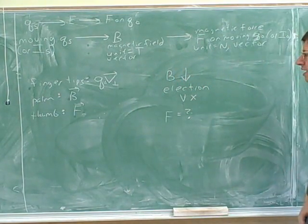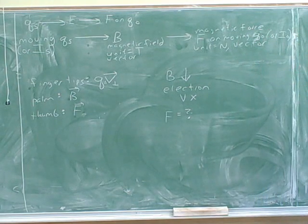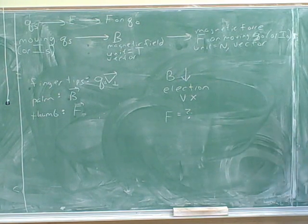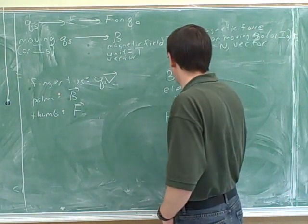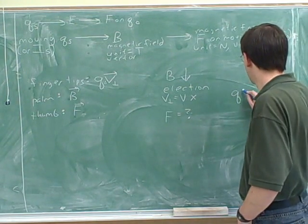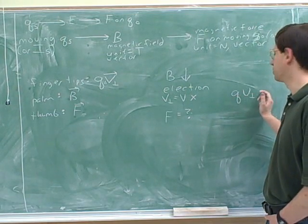Let's try this next problem. We have an electron moving in a magnetic field, and we want to know the force on that electron. We know that V is pointing into the board, and Q is negatively charged because it's an electron. B perpendicular is equal to B since this vector is already perpendicular to B. V perpendicular — Q is pointing out of the board. When we multiply by the negative charge, the direction reverses, so QV perpendicular will be pointing out of the board, which is represented as a dot.